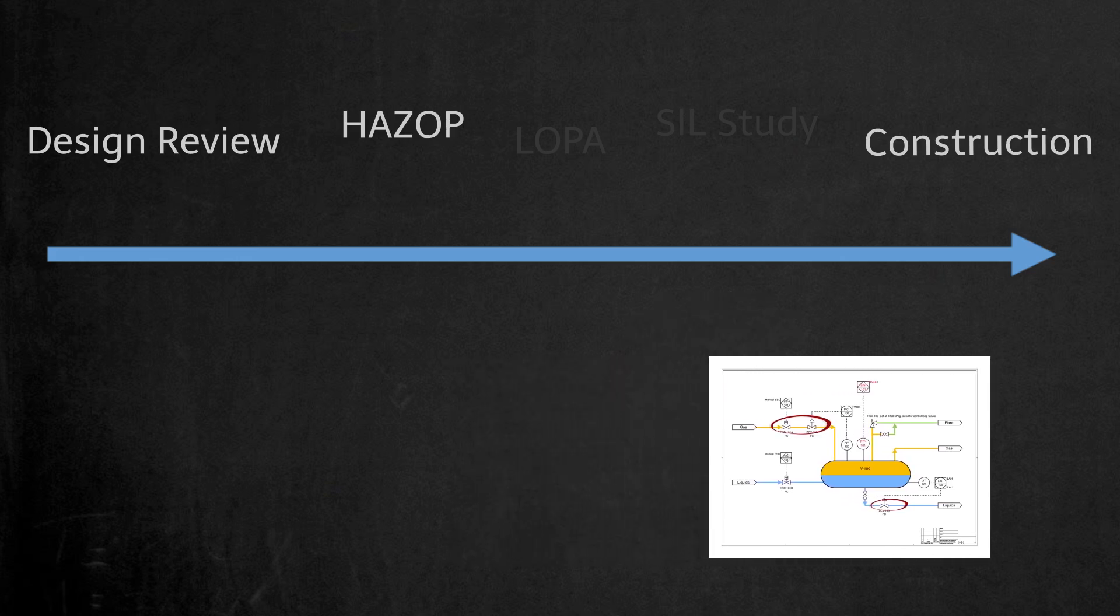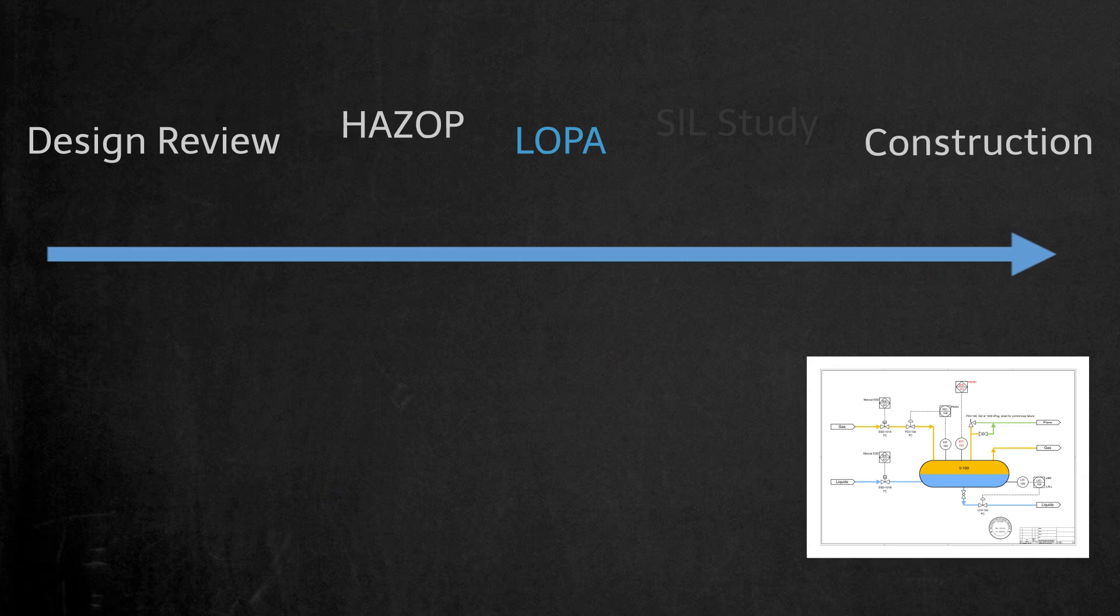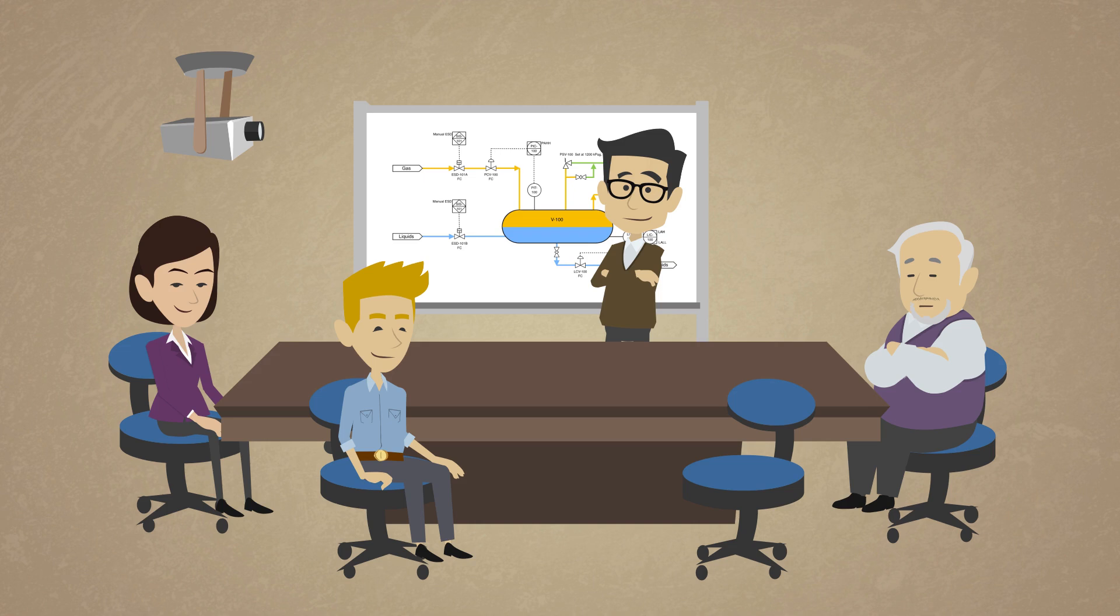In a PHA, a HAZOP can be followed by a layer of protection analysis, or LOPA, and a safety integrity level study. These methodologies are used to analyze high-consequence scenarios, and will be discussed in the next chapters of this course. Let's take a look at the key plays involved in a HAZOP, and the outcome you can expect.